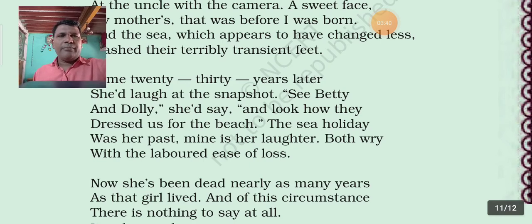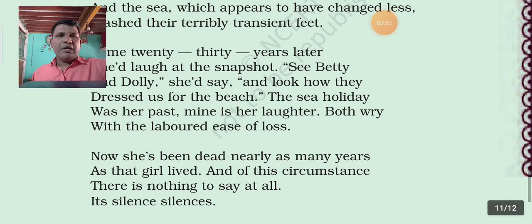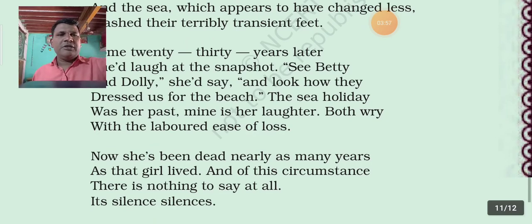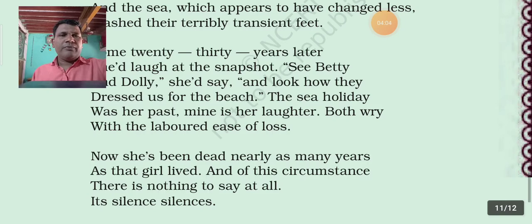Was her past and mine — her laughter. In this line, the word 'her' is repeated, so repetition, figure of speech, is used. With her labored ease — 'labored' means hard work and 'ease' means easy work. Both words are opposite words. So oxymoron, figure of speech, is used here.